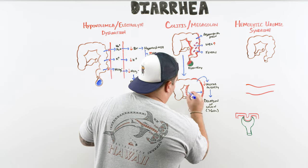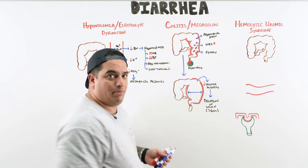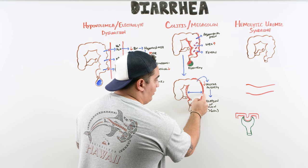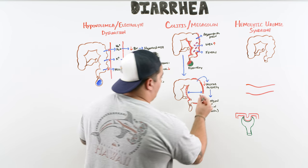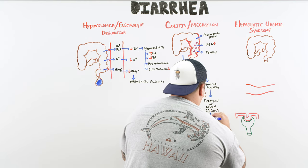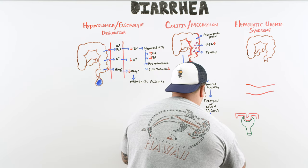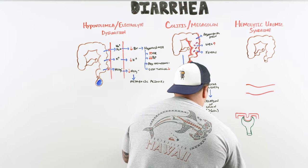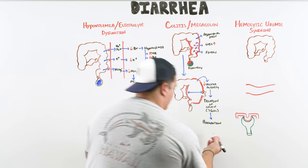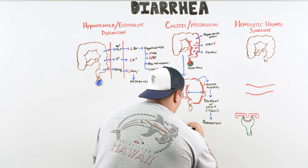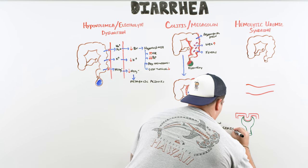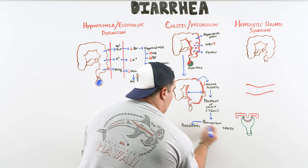With toxic megacolon — dilation greater than six centimeters — the intraluminal pressure can rise high enough to cause perforation. If the patient perforates, this can lead rapidly to peritonitis and sepsis, causing extreme deterioration.